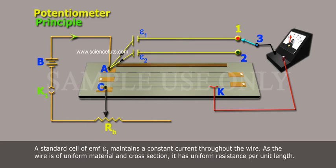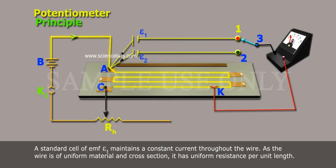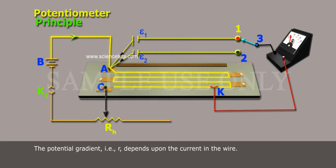A standard cell of EMF Epsilon-1 maintains a constant current throughout the wire. As the wire is of uniform material and cross-section, it has uniform resistance per unit length. The potential gradient, that is, R, depends upon the current in the wire.